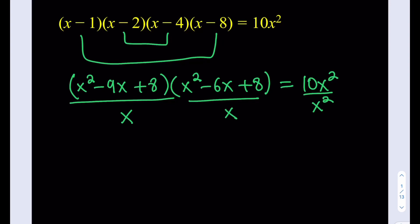Okay, and what is good about this? Now, when I do that, I'm going to be getting x minus 9, because 9x divided by x, plus 8 over x, multiply by x squared divided by x is x, minus 6x divided by x is 6, plus 8 over x. And the x squared is going to cancel out here. We're going to get a really nice answer, which is 10.